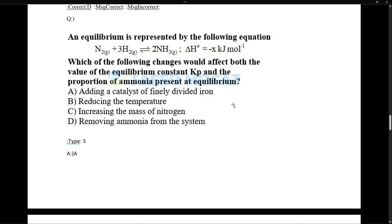An equilibrium is represented by the following equation, negative 92.46 kilojoule per mole. Which of the following changes would affect both the value of constant Kp and the proportion of ammonia present in the equilibrium? Now remember that Kp is only affected by temperature. None of the other factors affect Kp or Kc, only temperature.